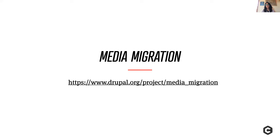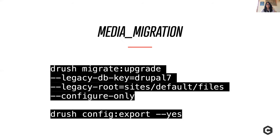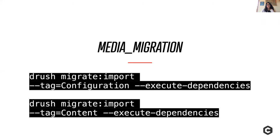One interesting nuance about media_migration is that it can also transform all your media WYSIWYG tokens into proper entity embeds in Drupal. It leverages Drush commands to automate these processes. You can run drush migrate:upgrade, pass in the key for the legacy database and the file system root of the legacy system, with the configure-only flag, export this configuration, and then run your configuration and content migrations.